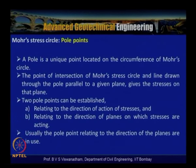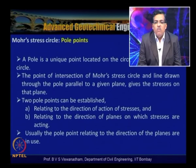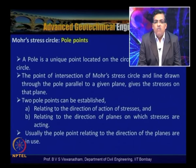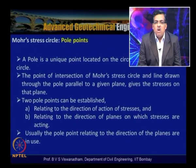A pole is a unique point located on the periphery of the Mohr circle. The point of intersection of the Mohr stress circle and a line drawn through the pole parallel to a given plane gives the stresses on that plane. This pole point is also called the origin of planes.